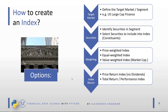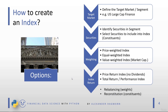Once we have defined and created our index, there are ongoing tasks. First, rebalancing — we must define how and when to rebalance weights that can drift from their targets. Second, reconstitution — we must decide when and how to change the constituents. Those are the five major steps of index construction.